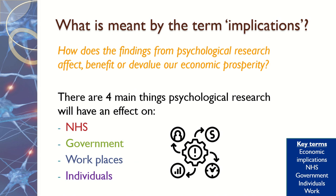When we're talking about implications, we're talking about whether psychological research benefits or has a negative effect on the economy. It can have a negative or positive effect on four different things: the NHS, the government, workplaces, and individuals. The NHS costs money to run and the government pays for that upkeep, but the only way the government is able to fund the NHS is because individuals work hard and pay taxes.